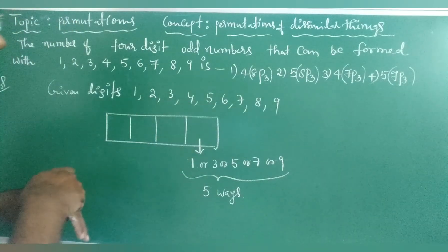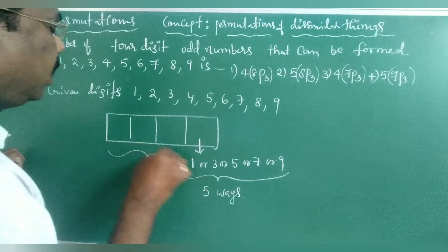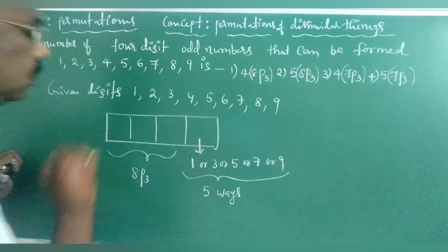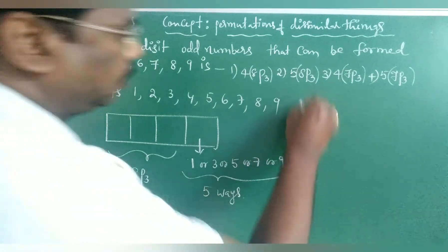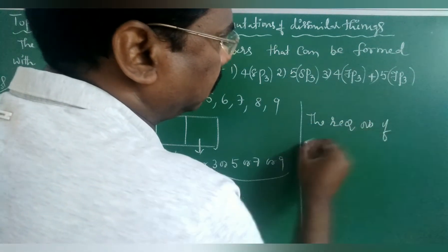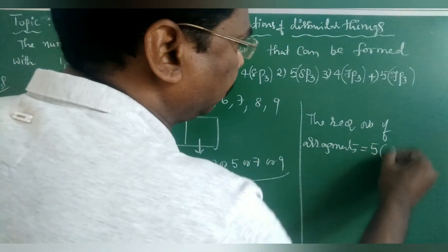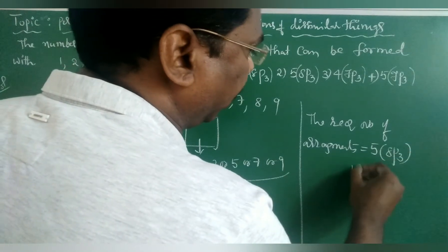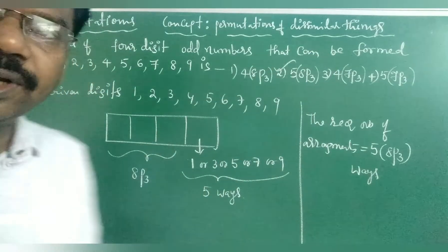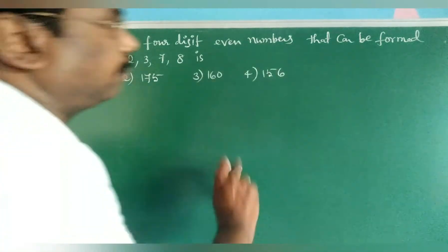Once the unit place is filled (say with 1), there are 8 remaining digits. The remaining 3 places can be filled with those 8 digits in 8P3 ways. Therefore the required number of arrangements is 5 × 8P3. The 2nd option is the correct one.